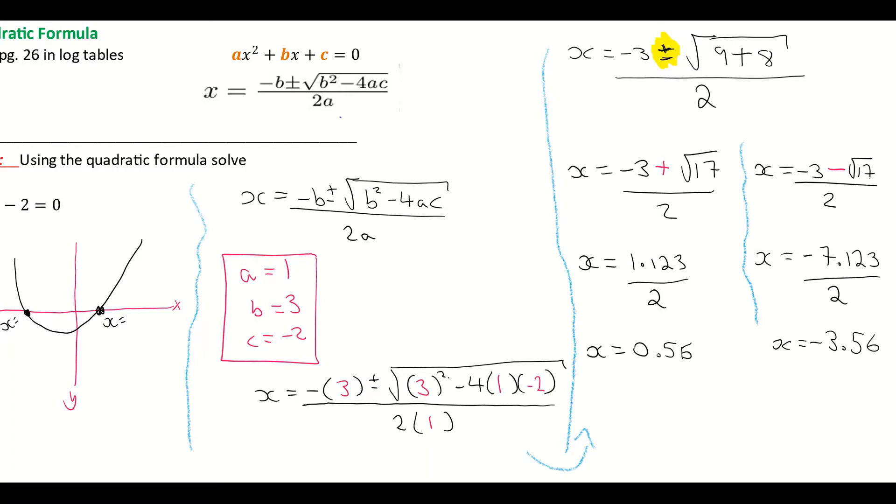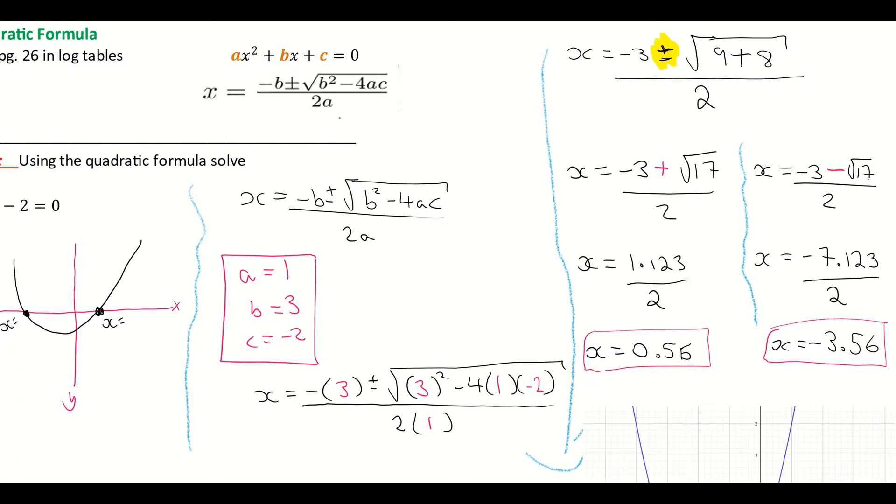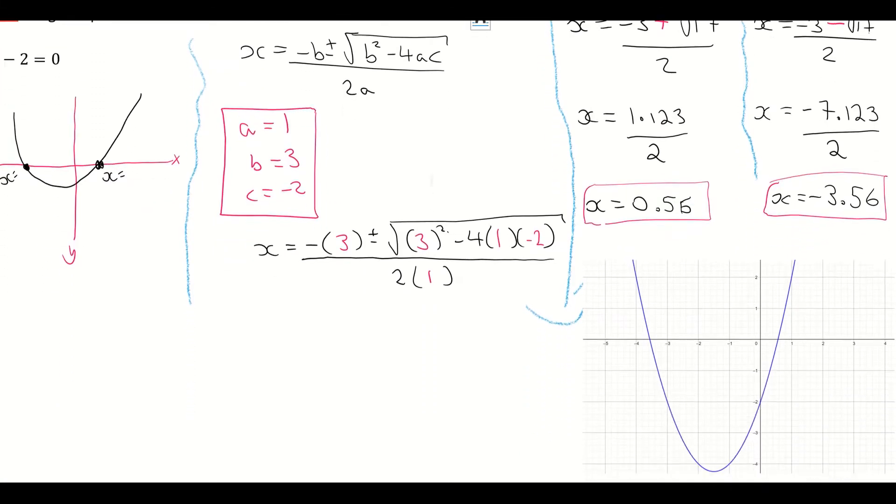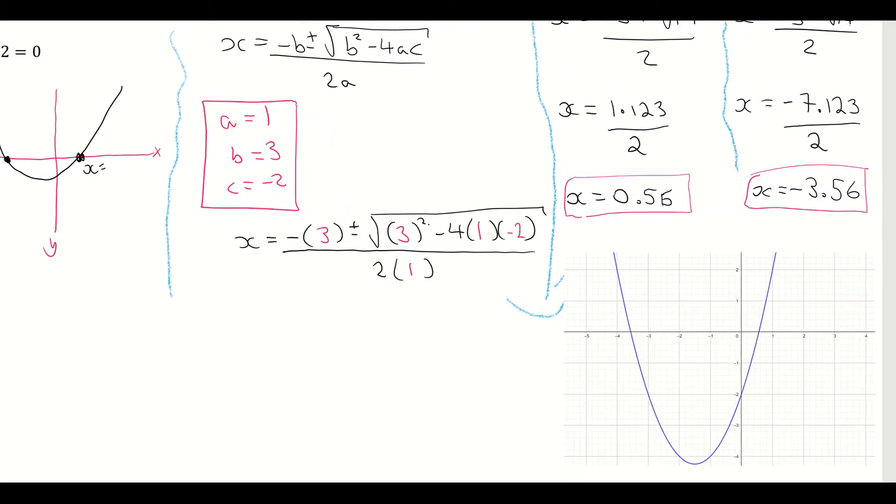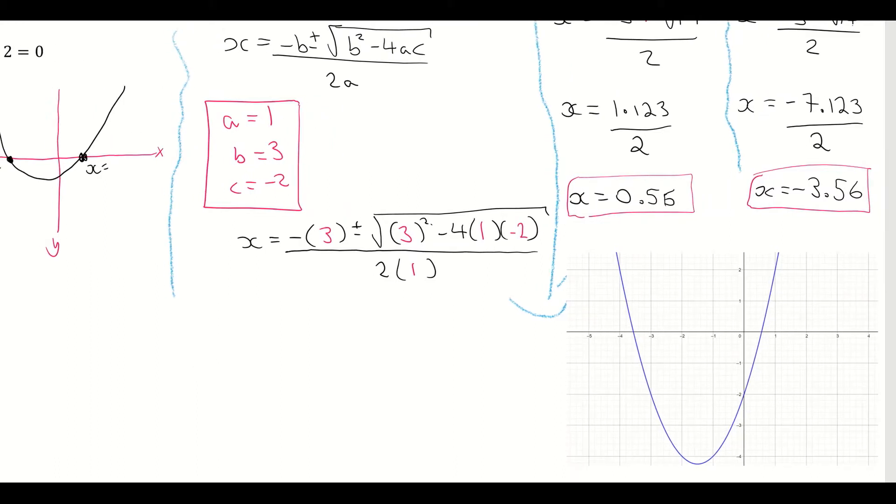And I'm just going to show you what they look like on a graph now. So I'm just using GeoGebra here, a graphing tool for mathematics. So you can see it here. And on my graph where it crosses the x-axis, you can see that it's crossing the x-axis here, slightly below 1 and between 0. So that's the value of 0.56. So x equals 0.56.